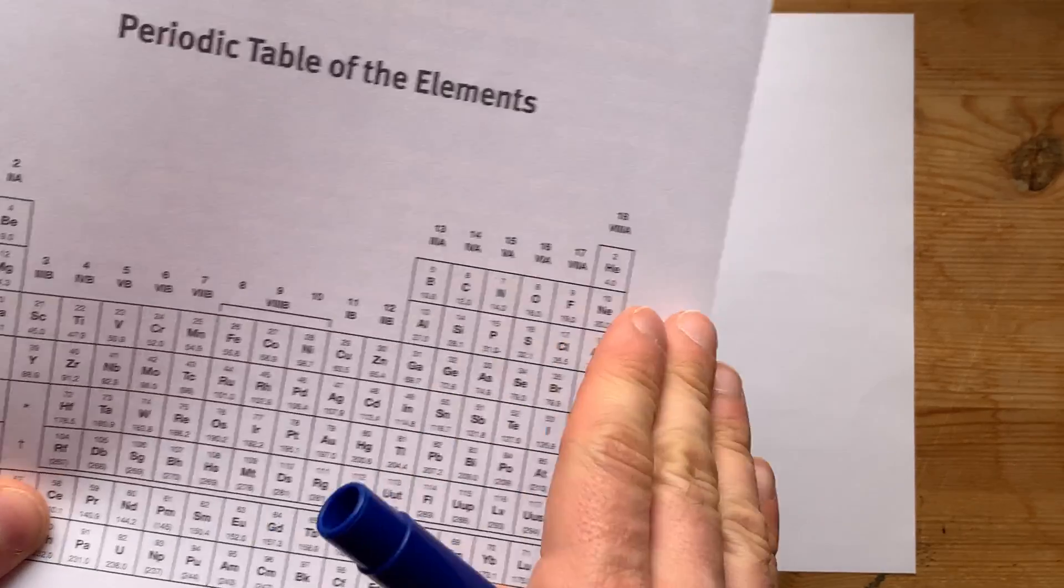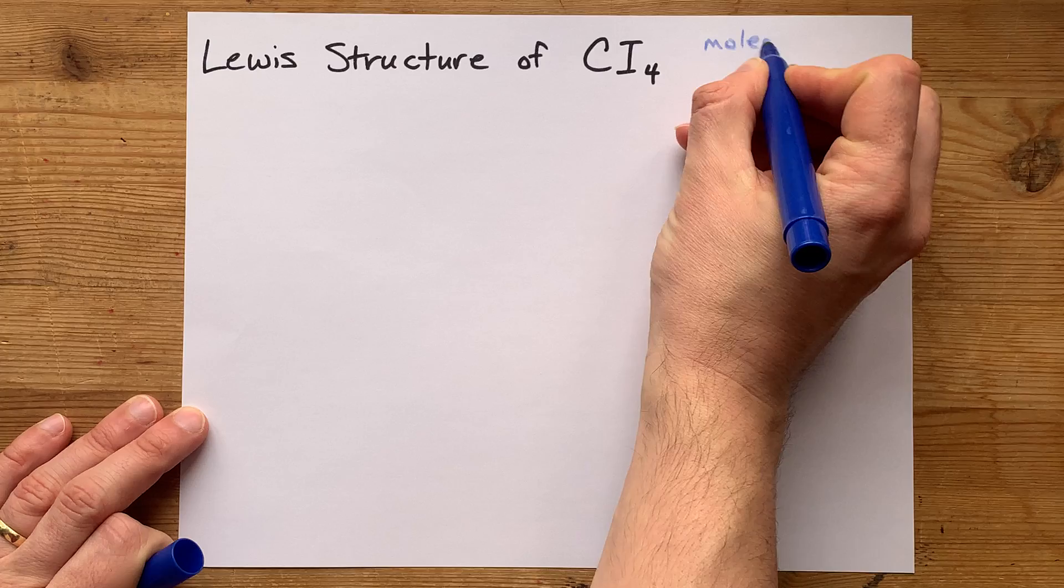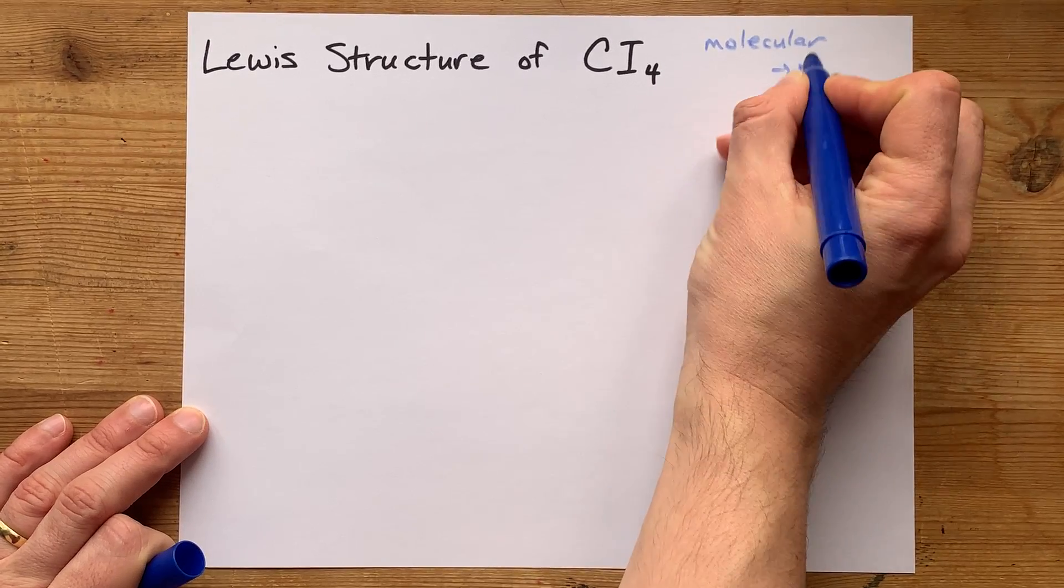Carbon and iodine are both non-metals. That means this is going to be a molecular compound that forms by sharing electrons.